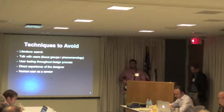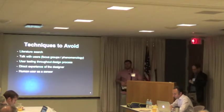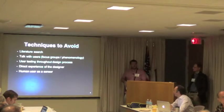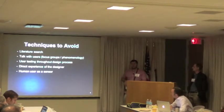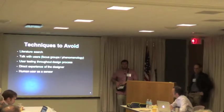Second, talk to potential end users. A great way to avoid the engineering trap is to get input from people who are going to use your product, and a great way to do this is a focus group. This is fast, cheap, and simple, and it tells you a ton about what people want and what people don't want — which has a direct correlation on the feature set you're thinking about when developing your device.